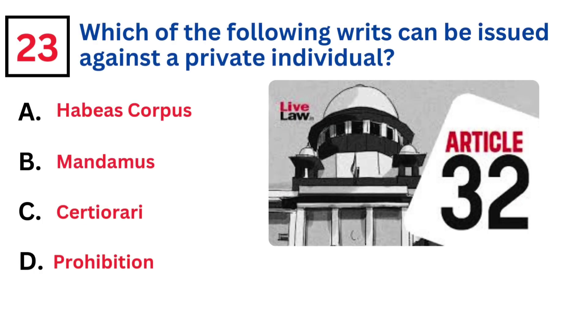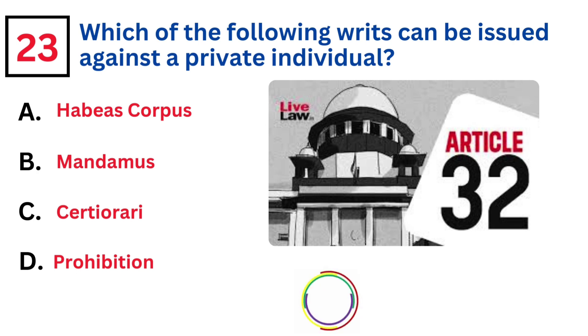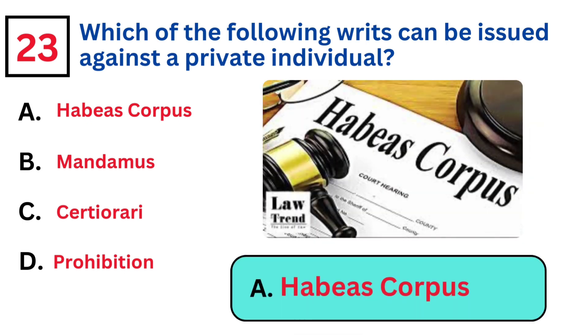Which of the following rights can be issued against a private individual? Answer A. Habeas corpus.